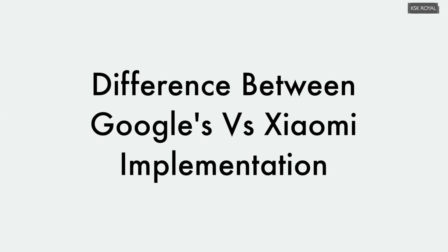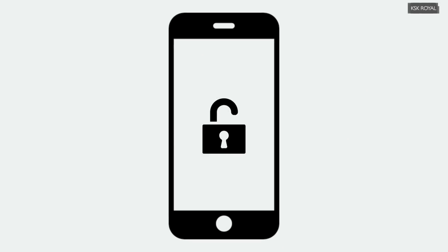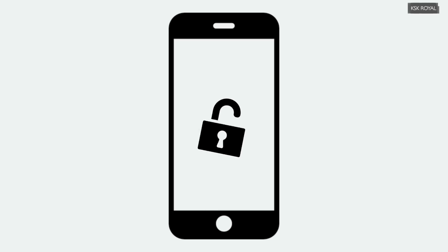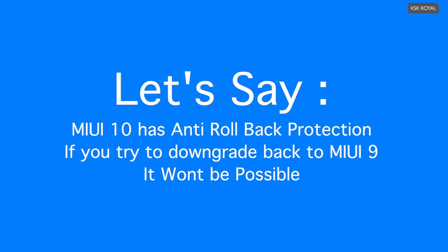The biggest difference between Google's and Xiaomi's implementation is that Google's anti-rollback protection can be disabled if you unlock the bootloader, while Xiaomi's cannot be disabled. Once you install a MIUI build with anti-rollback protection enabled on a Xiaomi device, there's no going back. For instance, anti-rollback protection is enabled for Xiaomi's Mi 8 and the Redmi Note 5 Pro starting in MIUI 10 China and MIUI 10 Global Beta respectively.